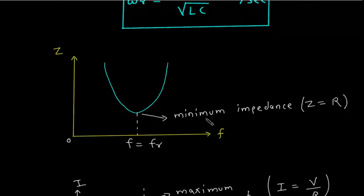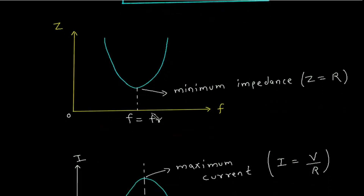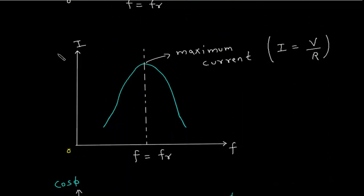Looking at the relation between impedance and frequency, at the resonant frequency the impedance is minimum — Z = R. For the relation between current and frequency, at the resonant frequency the current is maximum, and I = V/R.